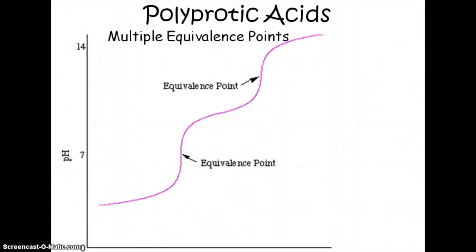Alright, now polyprotic acids are the ones that have multiple hydrogens that they can give off, have these curves that have basically two titration curves put together. So you have one for the first hydrogen and one for the second hydrogen.